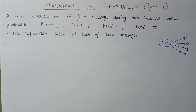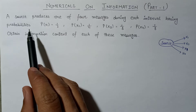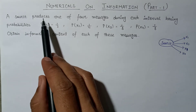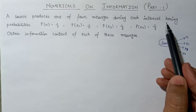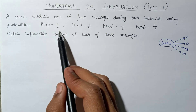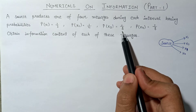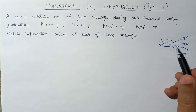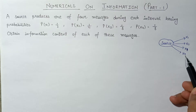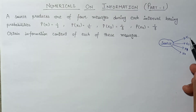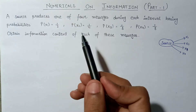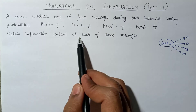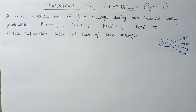Hi everyone. In this lecture we are going to solve numericals based on information, and this is the first part video of the numericals. Here is question number one: a source produces one of four messages during each interval having the probabilities P(x1)=1/2, P(x2)=1/4, P(x3)=1/8, and P(x4)=1/8. We need to obtain the information content of each of these messages.